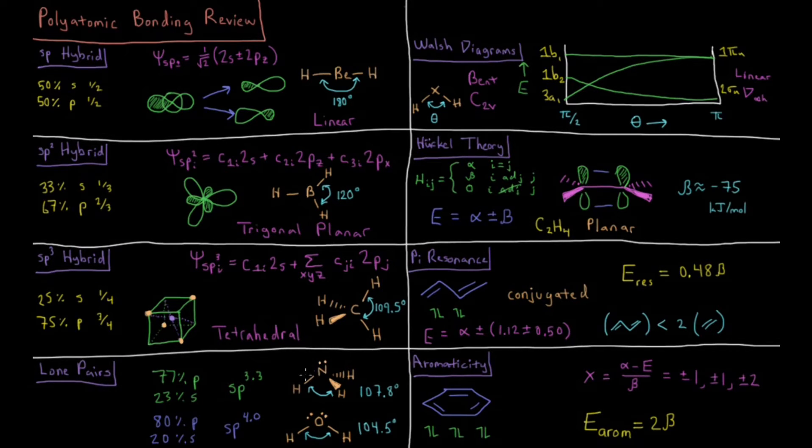If we calculate what kind of character or angles we need in our sp coefficients to get these bond angles, what you get for ammonia is sp3.3 as I defined in the video, and sp4.0 for water. That's 80% p-like or 77% p-like, more than the 75% of methane to get these preferred bonding angles. The lone pairs give us even more p-like character as we approach angles closer to 90 degrees.